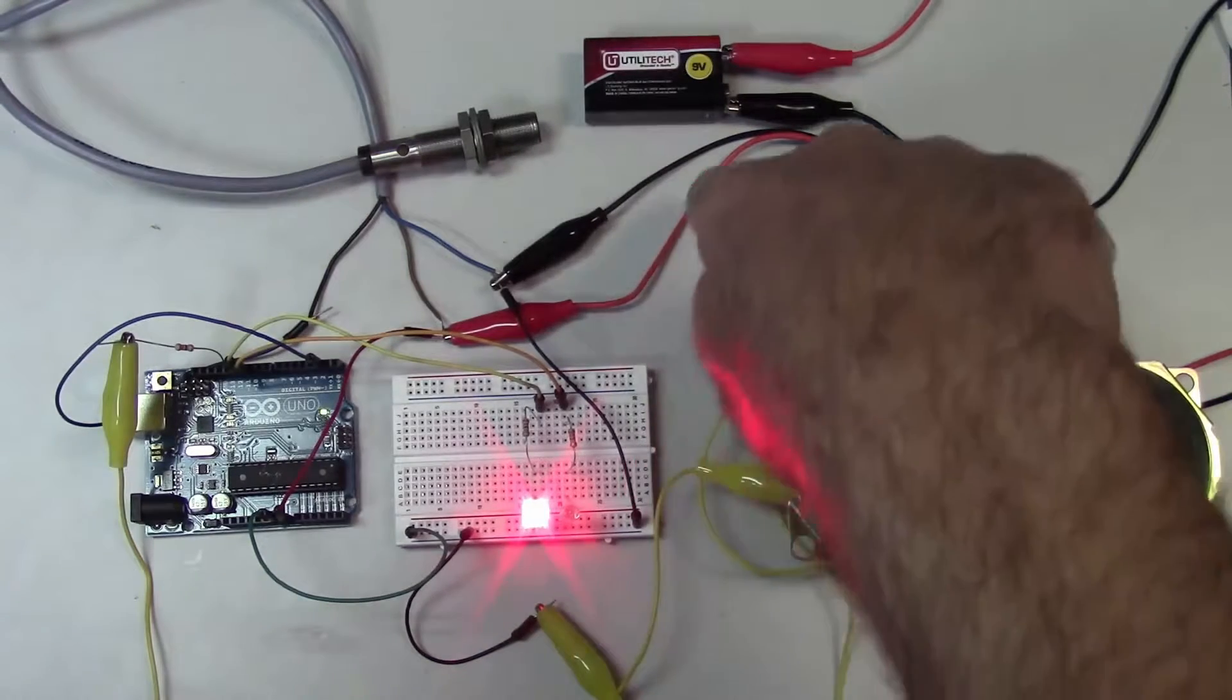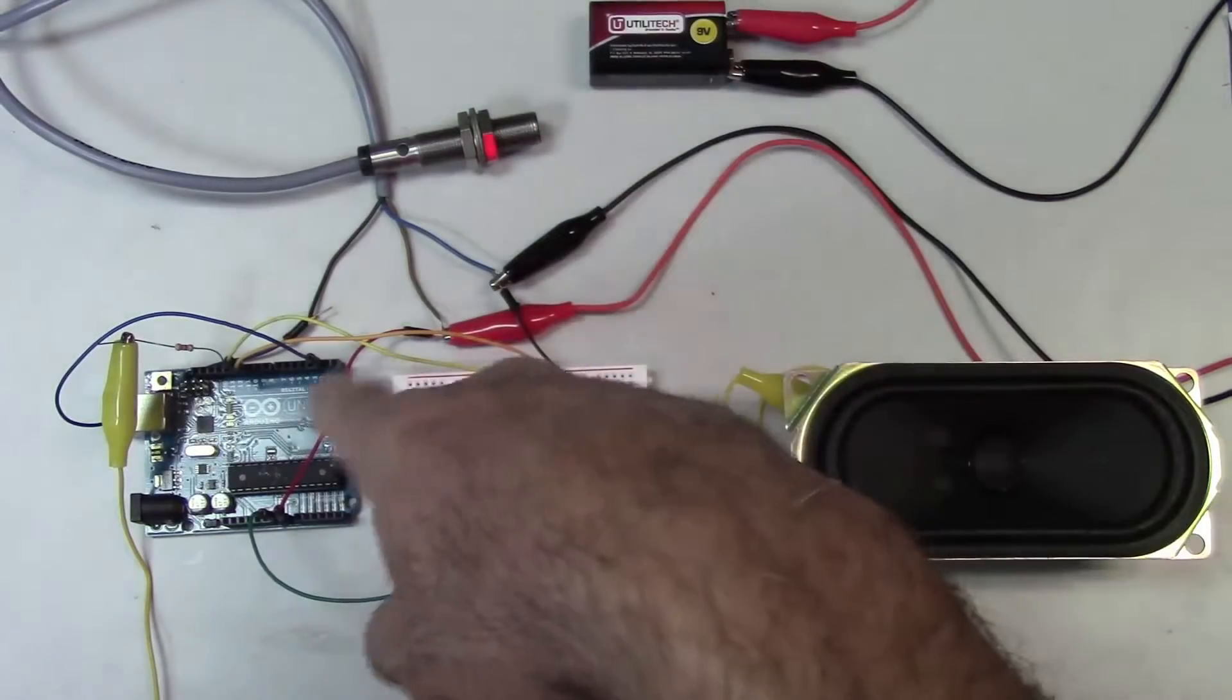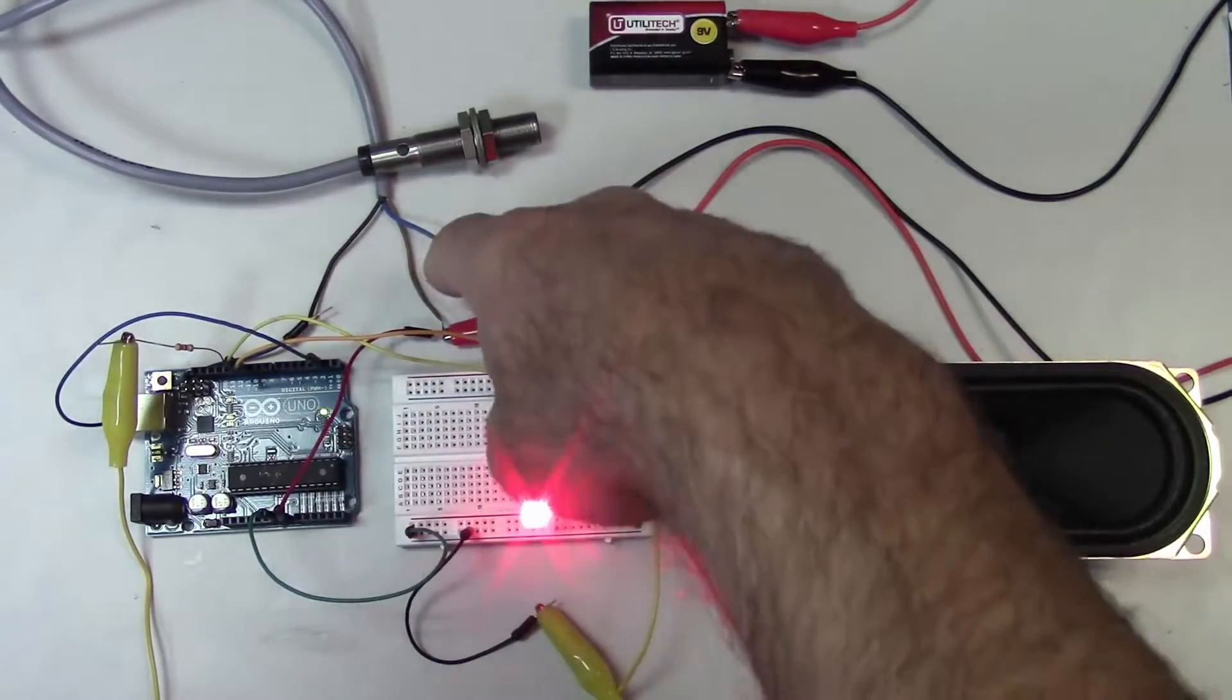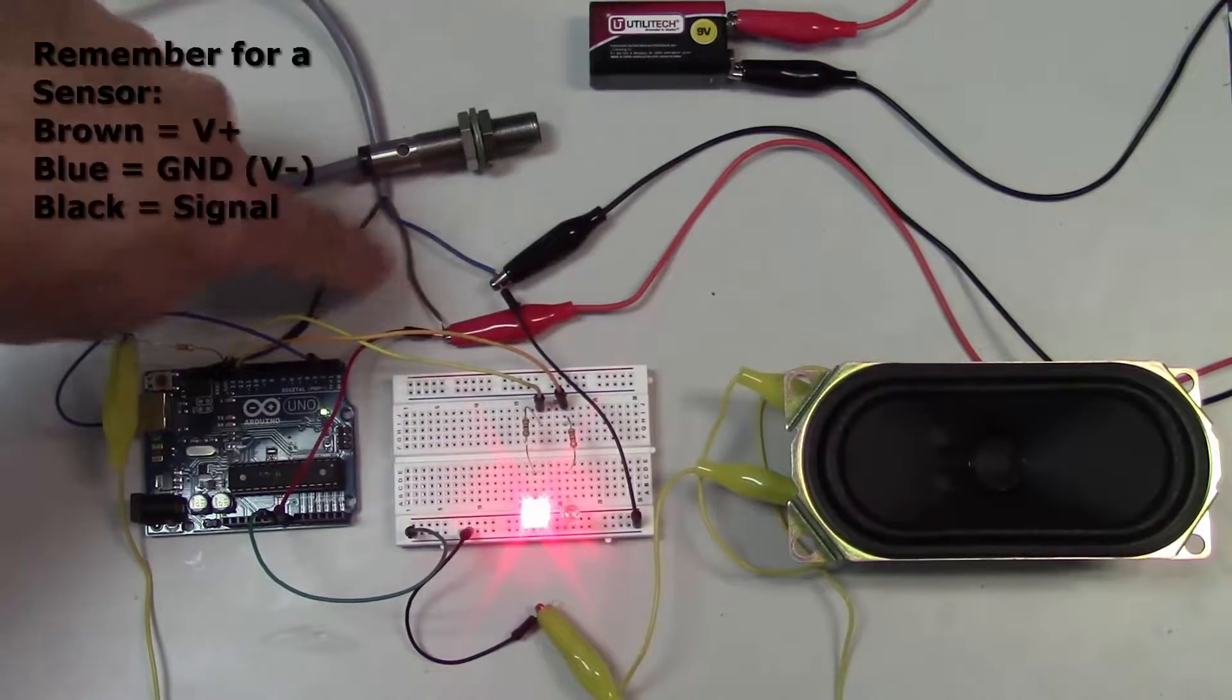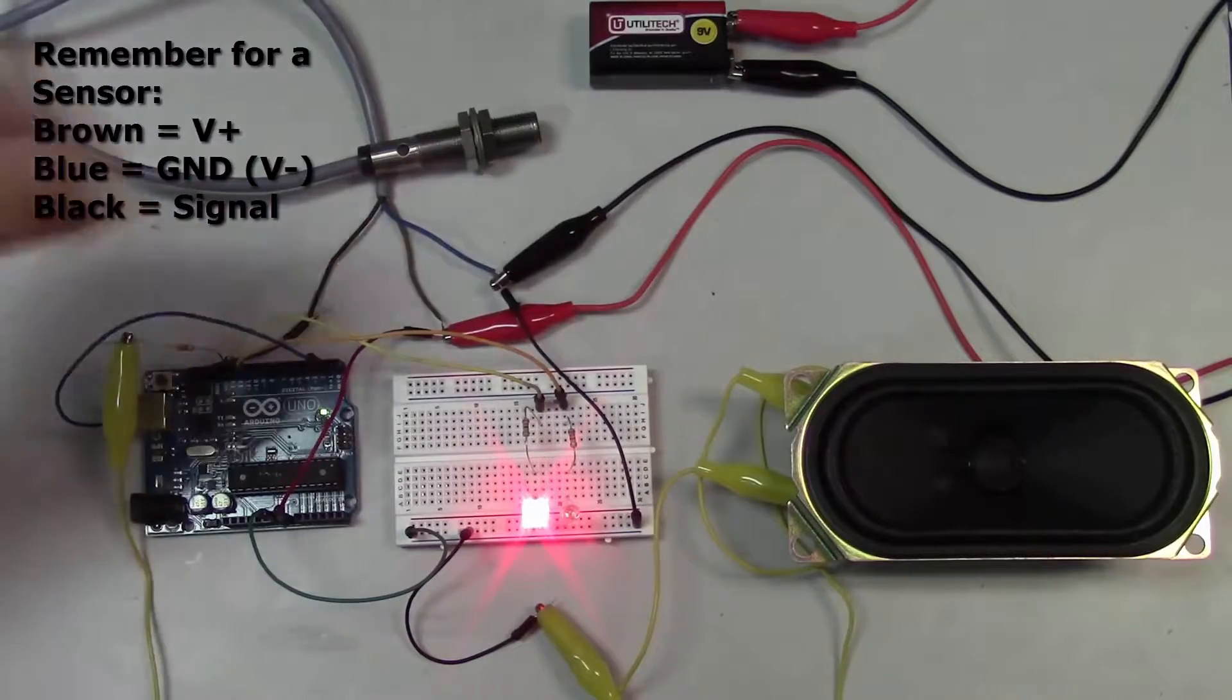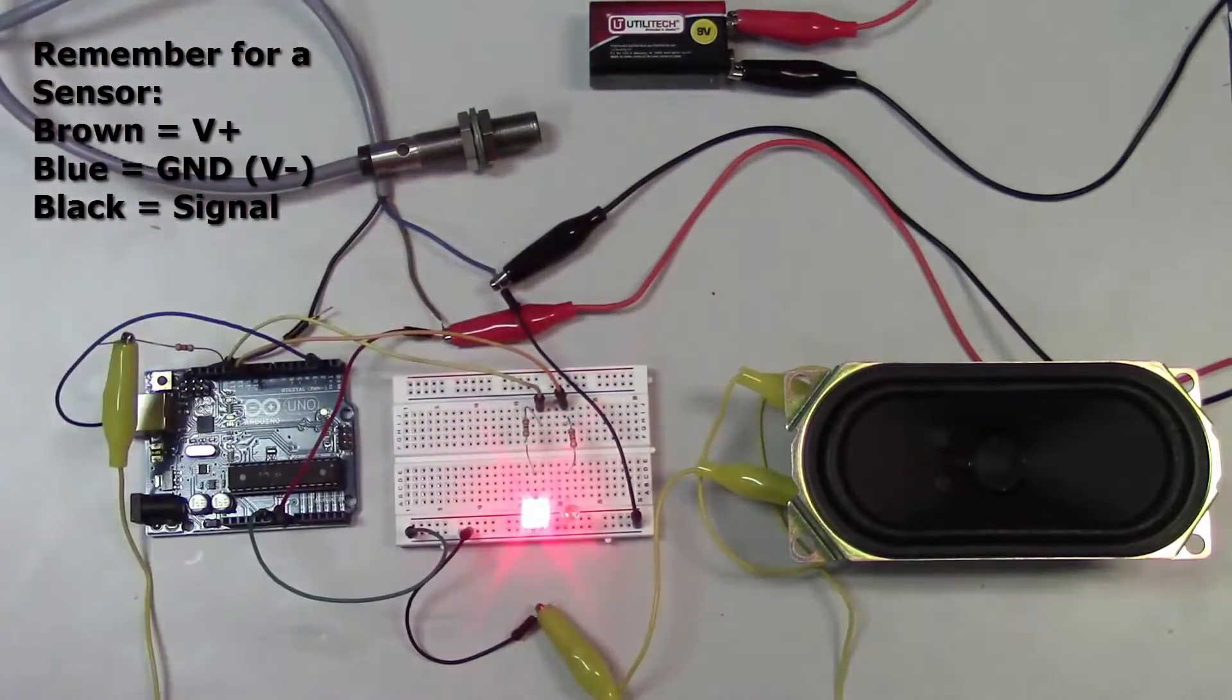So I've got my V plus from the 9 volt battery going to VN on the Arduino, and I also have it going to the brown wire on the sensor. That supplies power to both the sensor and the Arduino. My ground is ground for the sensor and the Arduino also.